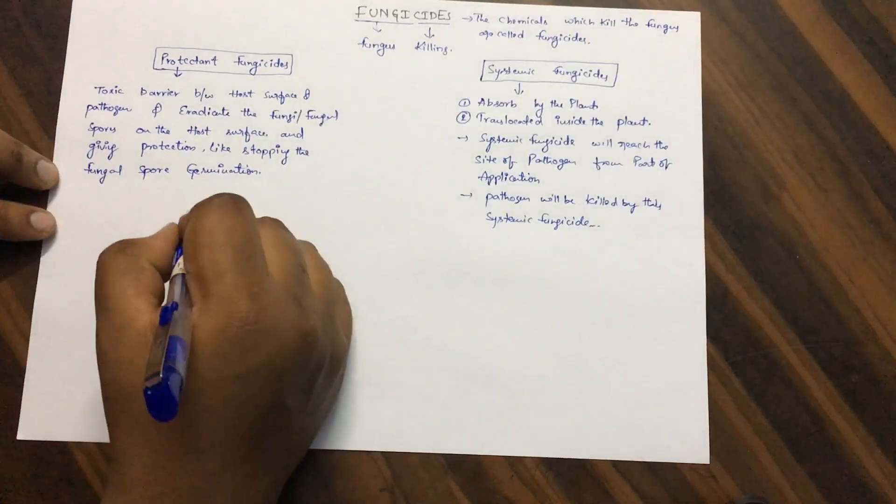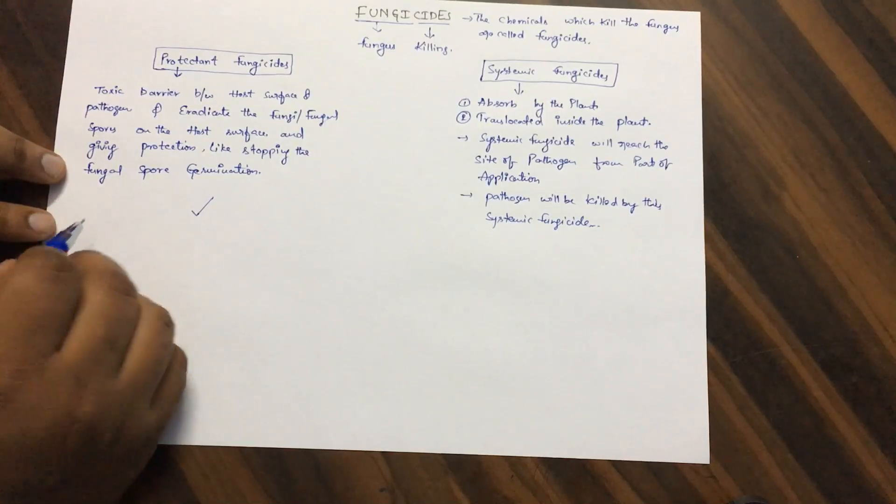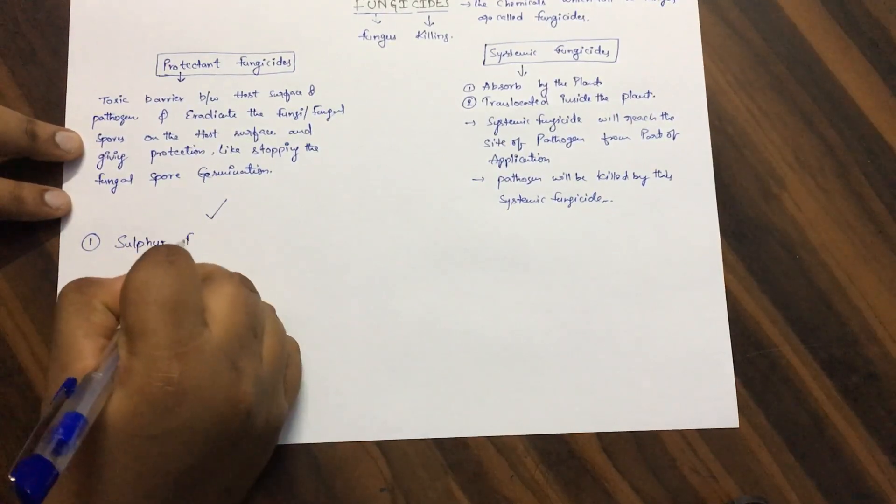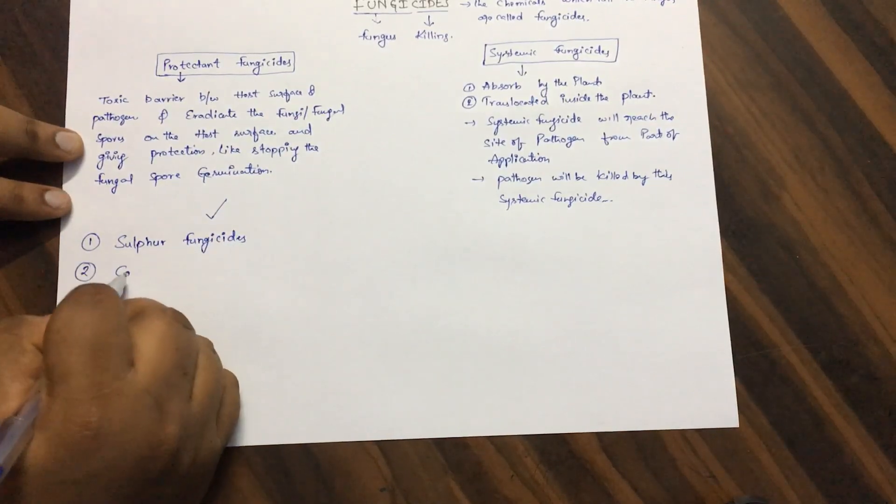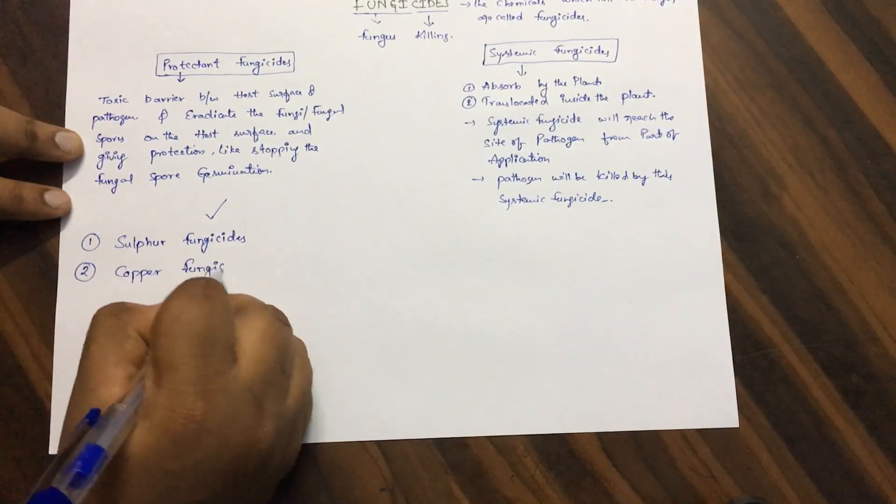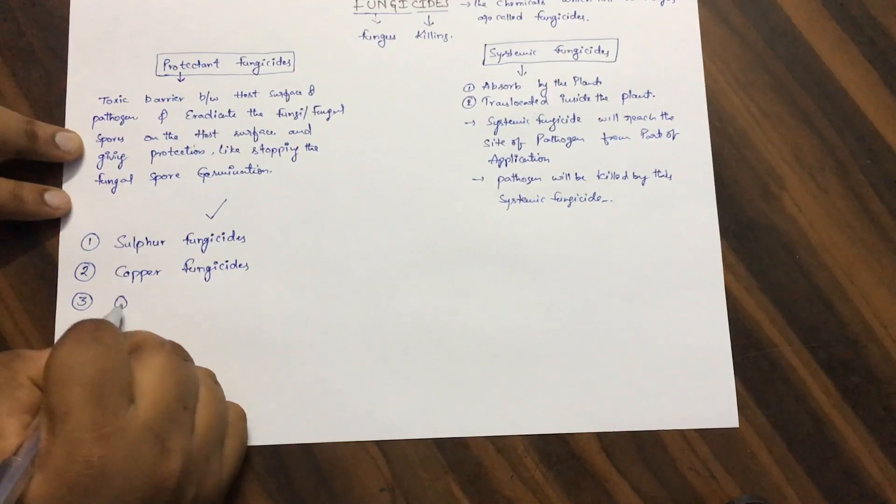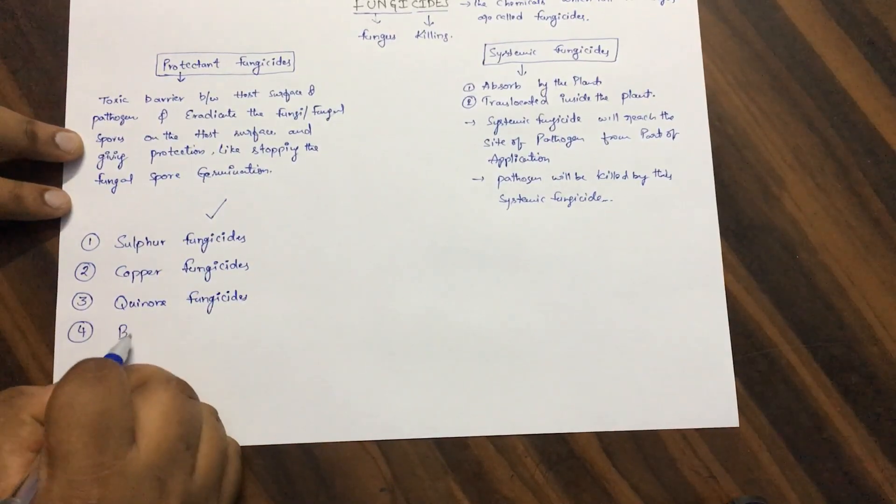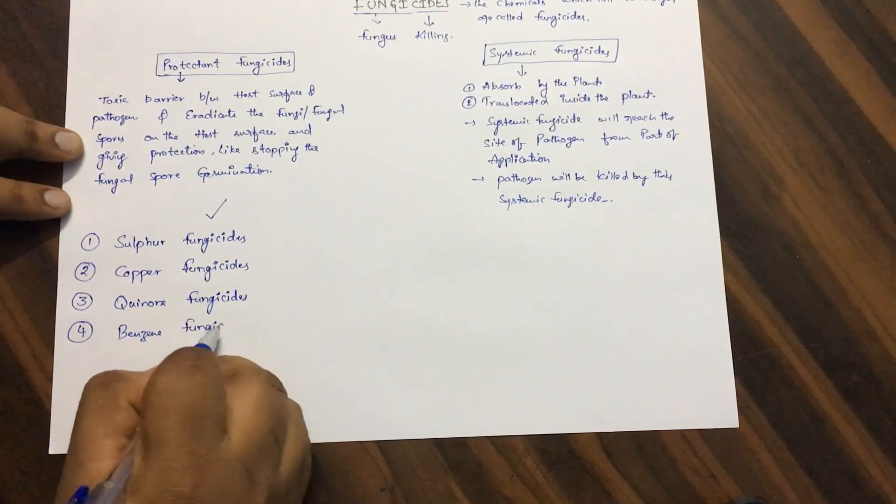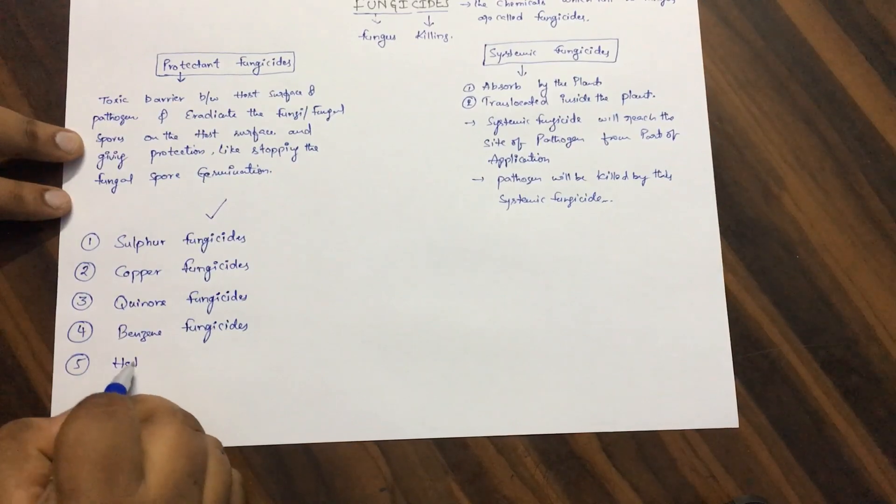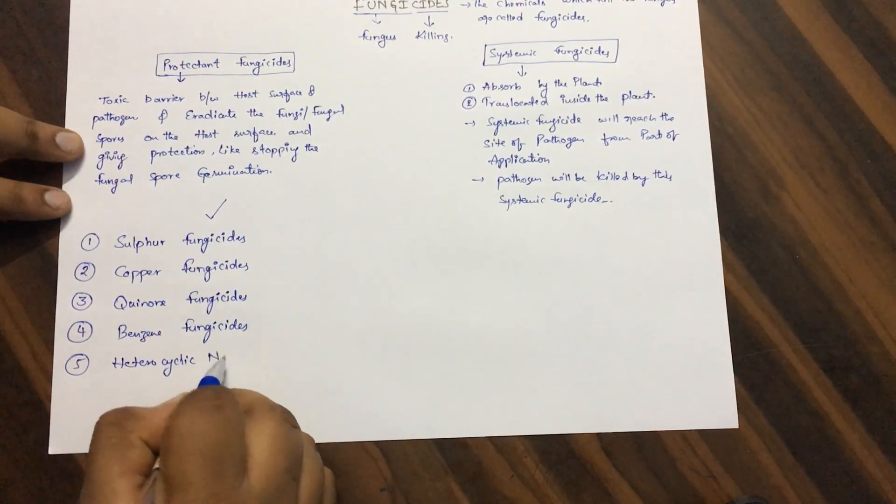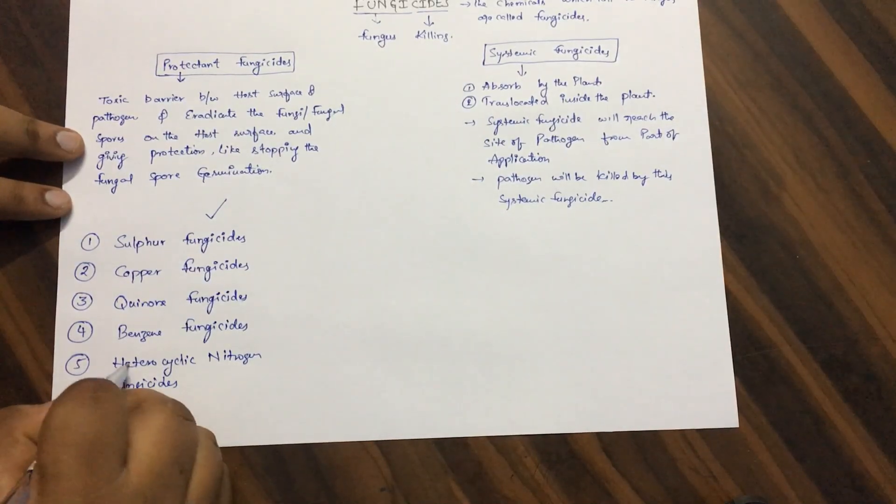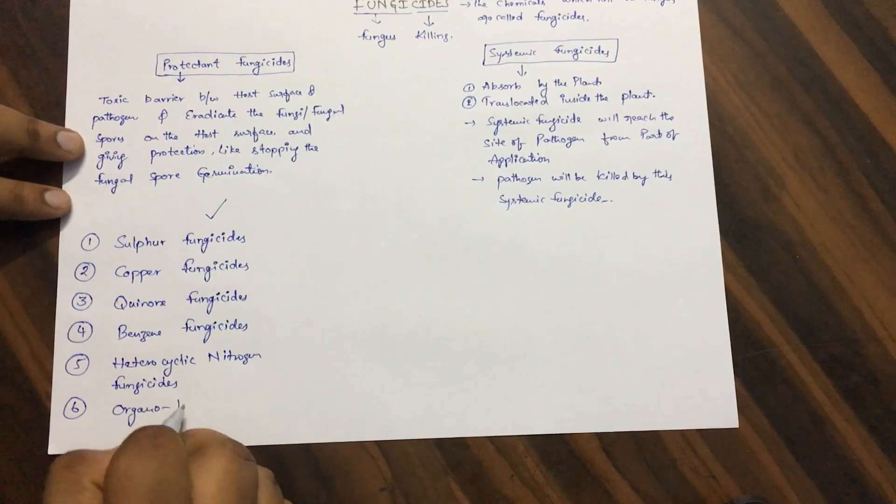So let us discuss about the protectant fungicide. Protected fungicides are divided again into sulfur fungicide, copper fungicide, quinone fungicide, benzene fungicide, and phthalamide benzene fungicide.